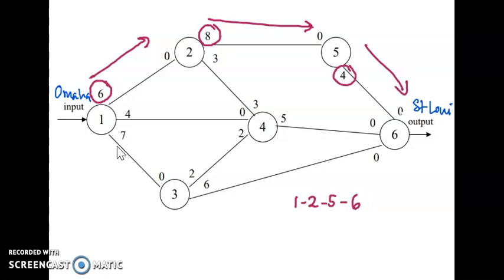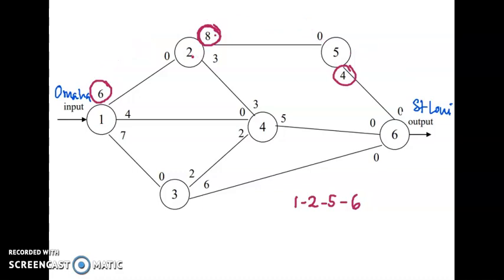The capacity from node 1 to node 2 is 6, and from node 2 to node 1 (opposite direction) is 0. The capacity from node 2 to node 5 is 8, and from node 5 to node 2 is 0. To find the maximum flow for this selected path, compare and find the minimum value among 6, 8, and 4 — so 4 is the minimum. If we go through path 1→2→5→6, the maximum flow value is 4.